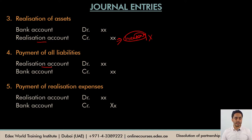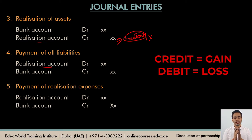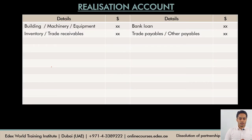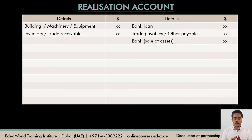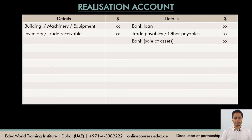If you notice a pattern in these entries: when the firm is receiving money, the realization account is being credited; when the firm is paying money, the realization account is debited. In your mind, you could imagine that the credit side of the realization account is the gain side and the debit side is the loss side. When the firm sells assets and receives money, that entry appears on the credit side as bank. Payment of liabilities and payment of expenses would appear on the debit side.